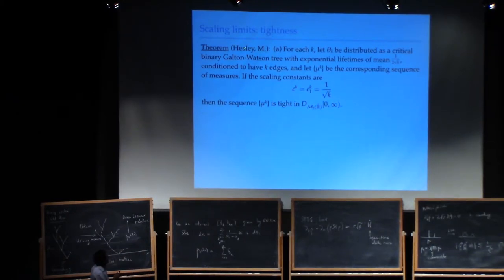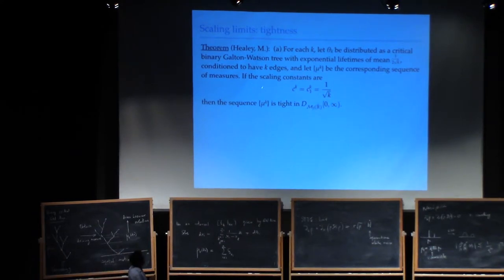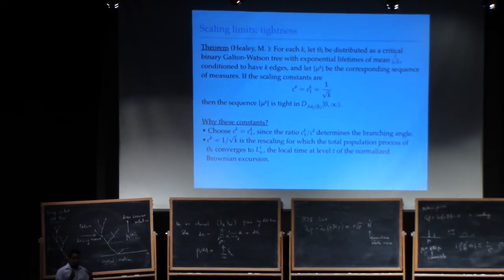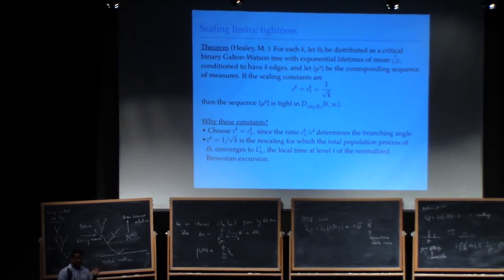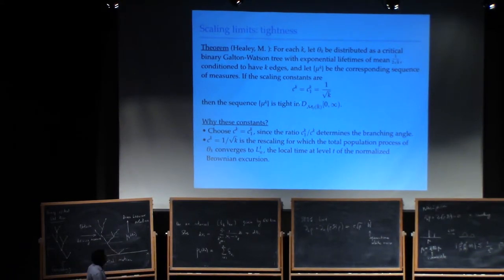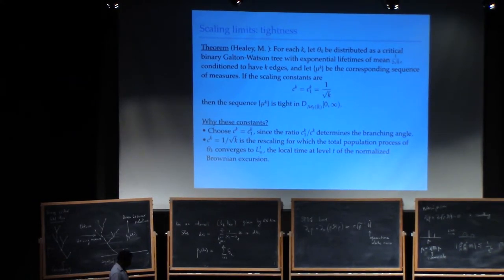The first theorem on tightness of the scaling limit: if I choose trees distributed as critical Galton-Watson trees and choose the corresponding sequence of measures, and choose the scaling constants in a specific way, then the sequence is tight. The reason for choosing these constants is to build trees where we have control over the geometry — specifically, the branching angles. The rescaling goes back to Aldous's theorem: this is the rescaling for which the total population process has a scaling limit, which is the local time of the normalized Brownian excursion.